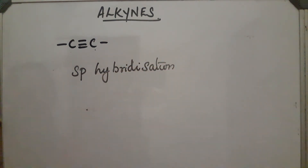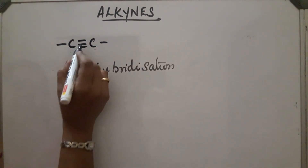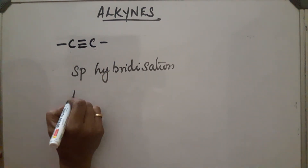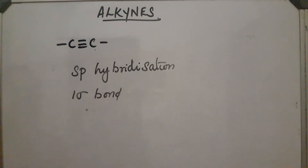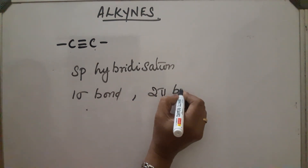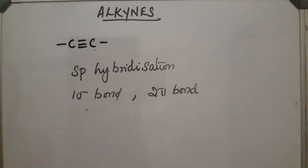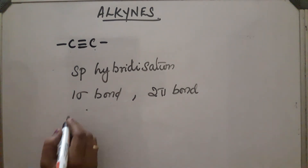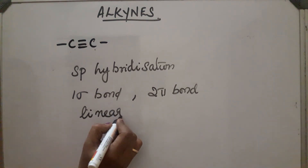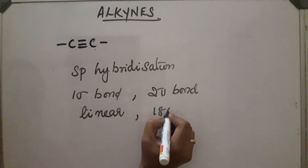We already discussed SP hybridization of carbon compounds earlier — please refer to that. The C≡C contains one sigma bond, formed by the head-on overlap of two SP hybridized orbitals, plus two pi bonds. The structure of this compound is linear and the bond angle is 180 degrees.